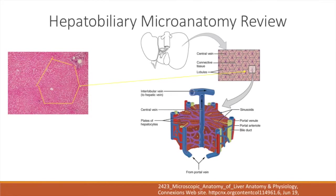Here we have the hepatic lobule, and essentially that's going to be built around the central vein. There's also the portal lobule, which is kind of a triangle focused around the portal triad. We have the portal arteriole on the corners, receiving supply from the hepatic artery. The central vein will keep on branching out and become part of the actual hepatic veins, which will then enter the inferior vena cava. We also have portal venules coming from the GI tract; they will eventually give off blood that will flow towards the central vein.